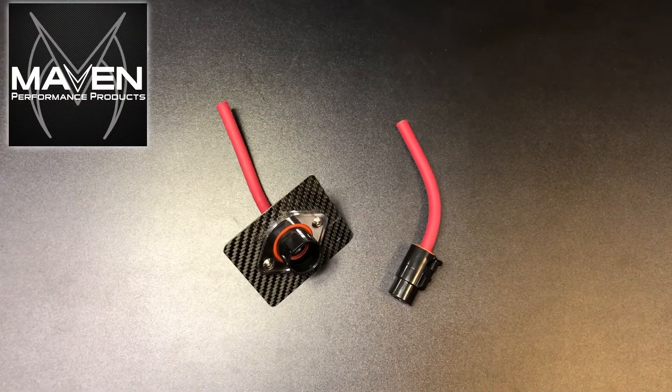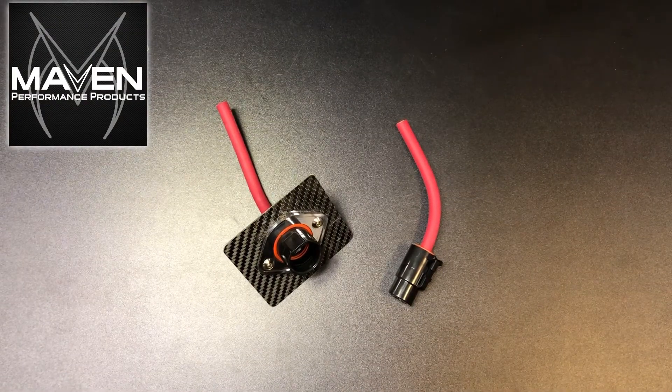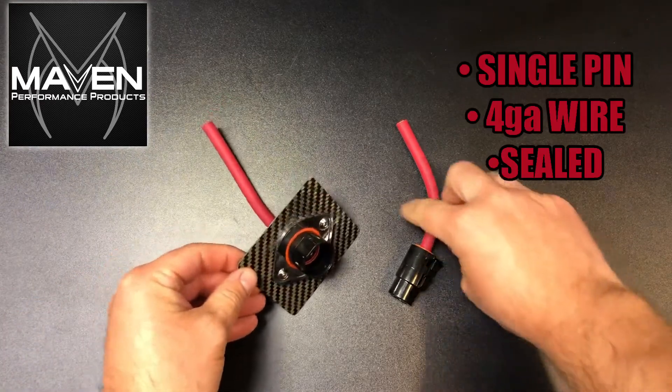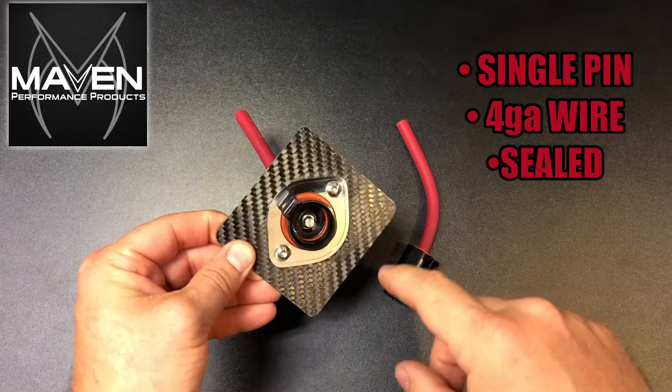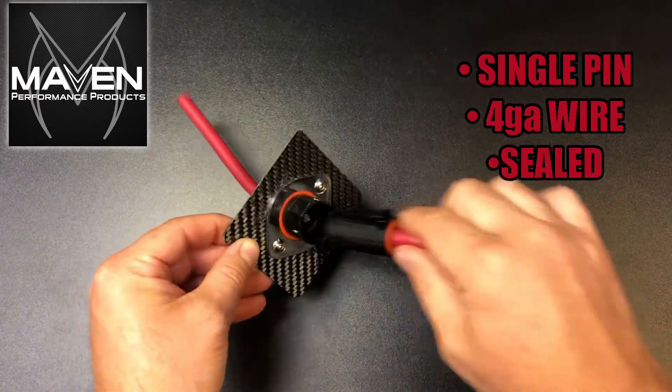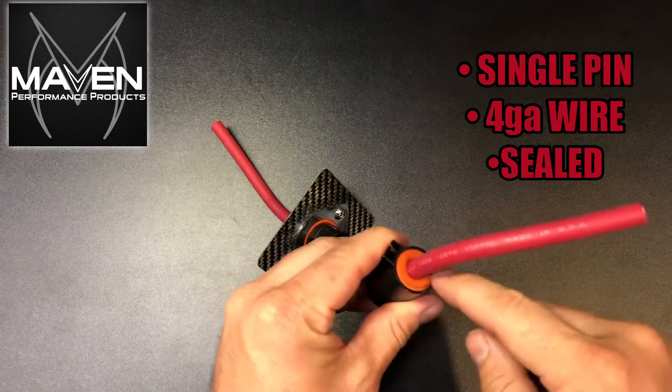Hey, thanks for tuning in. Today we're going to go through a quick installation video of this single wire connector bulkhead. It's a four gauge cable sealed application—sealed on the faceplate, sealed on the inside of the connector, and sealed on the back side of the cable.